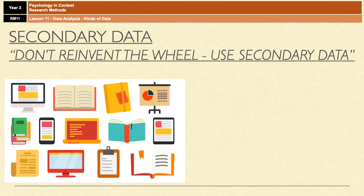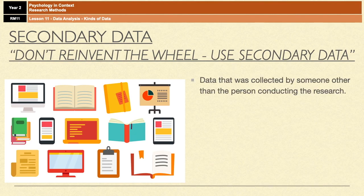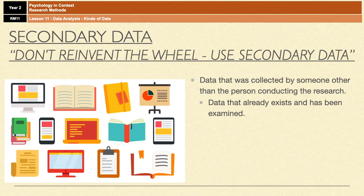Secondary data, on the other hand, is data that's been collected by someone else other than the person conducting the research. So essentially it's data that already exists, and it's data that's already been examined for its significance and for its validity.